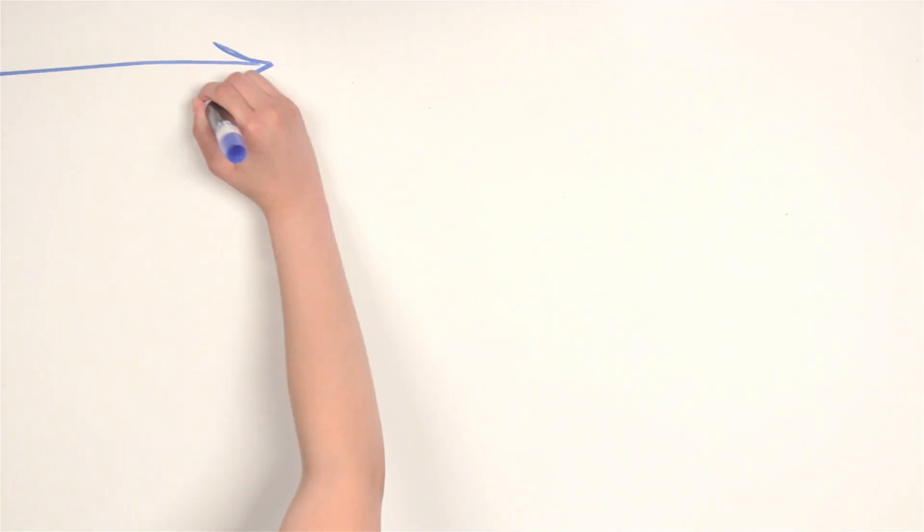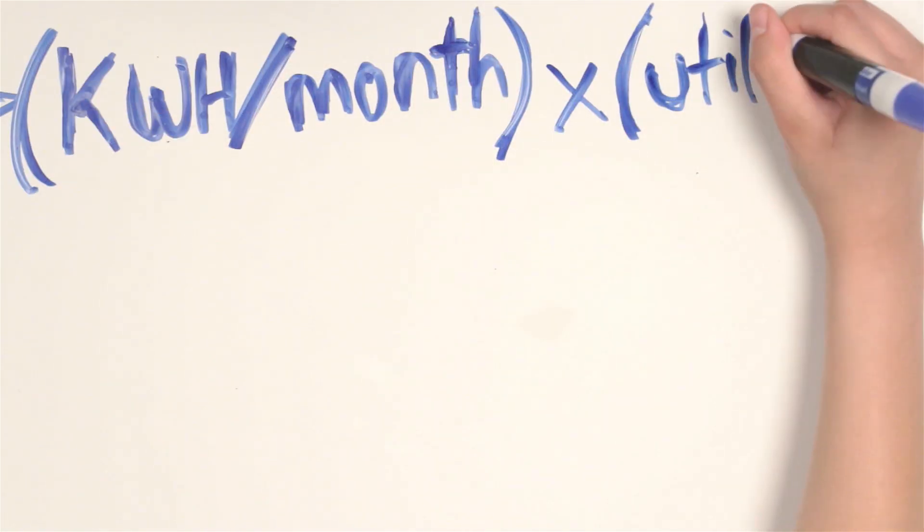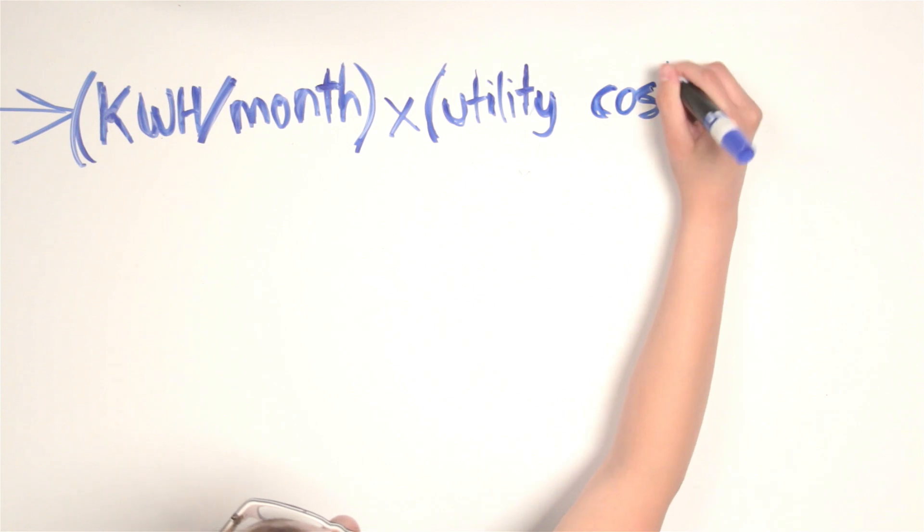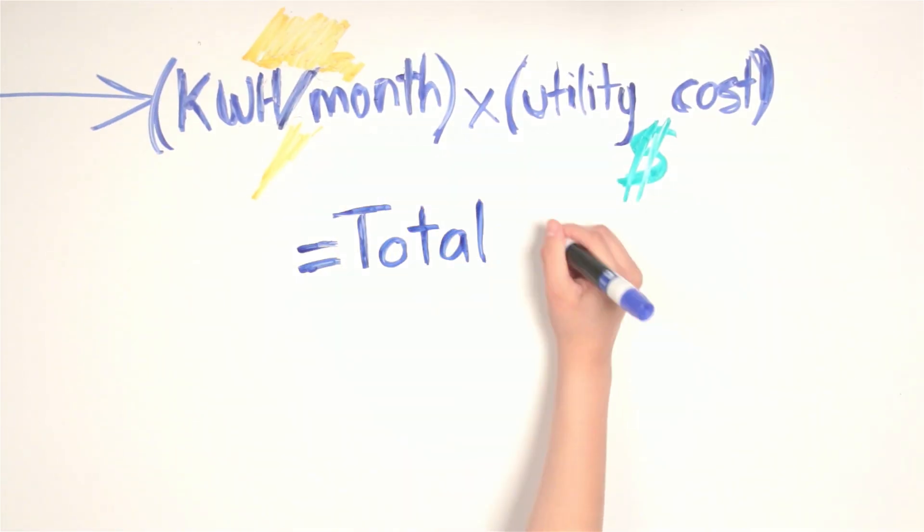And then last, multiply your total kilowatt hours per the time period you need to know the cost for, per day, week, month, etc., by your utility stated cost per kilowatt hours to get your total cost for that time period.